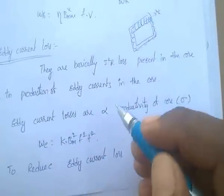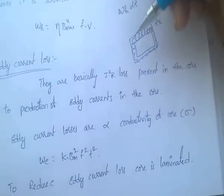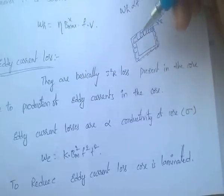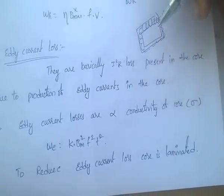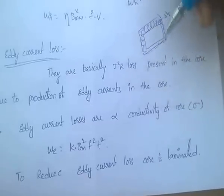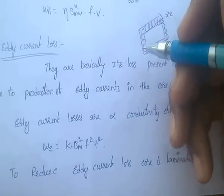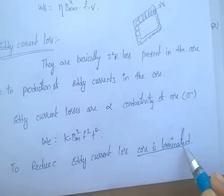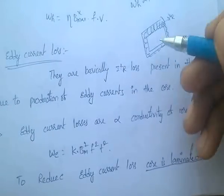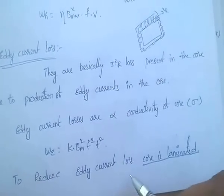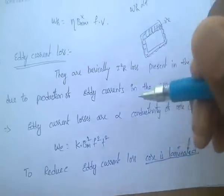Eddy current losses are proportional to the conductivity of the core. If the conductivity of the core is very high, eddy currents are also very high. To reduce eddy current losses, we reduce the conductivity or reduce the area of the core. To reduce the area, the core is laminated. When the area decreases, eddy current losses also decrease.